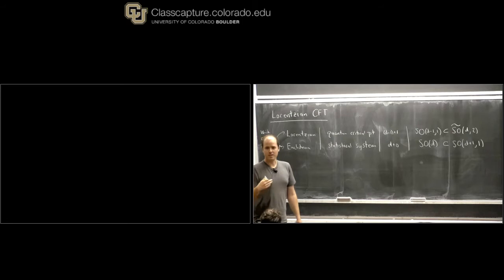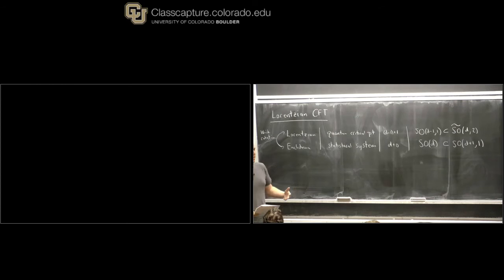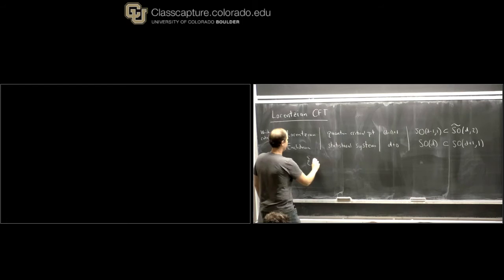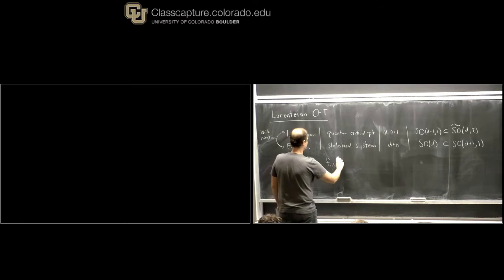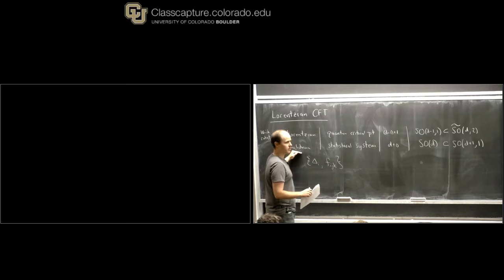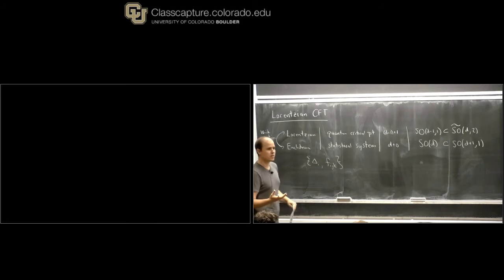Even though the data of a Lorentzian CFT is the same as a Euclidean CFT — namely operator dimensions and OPE coefficients — there are non-trivial observables that are very difficult to formulate in Euclidean signature, and also constraints that come from studying these observables that are deeply hidden in the Euclidean correlators. If you just study Euclidean correlators, it's very difficult to see these constraints. But if you go to Lorentzian signature, everything suddenly becomes clear.